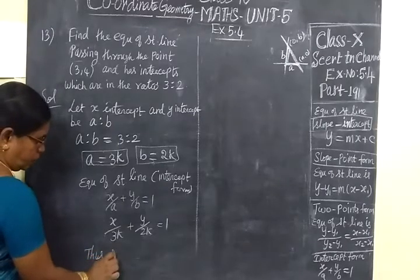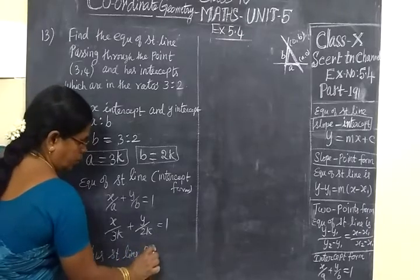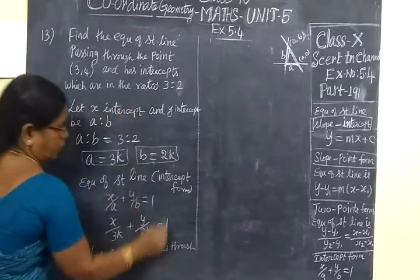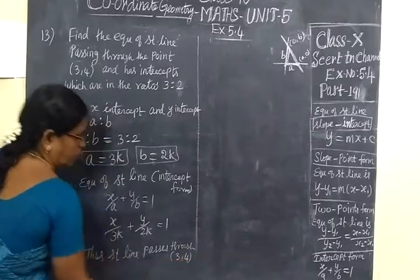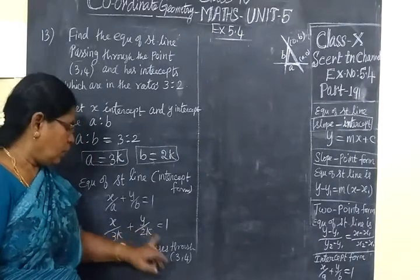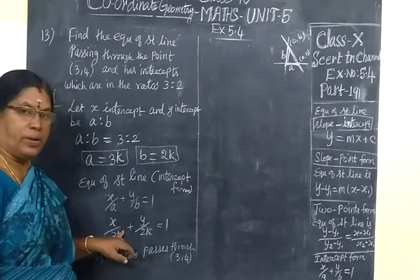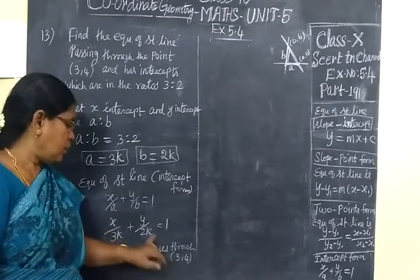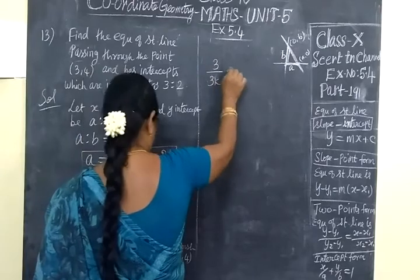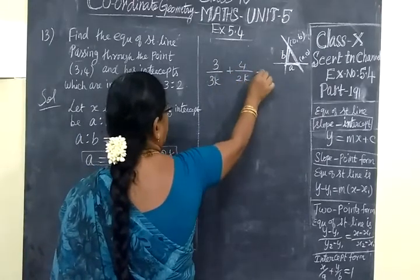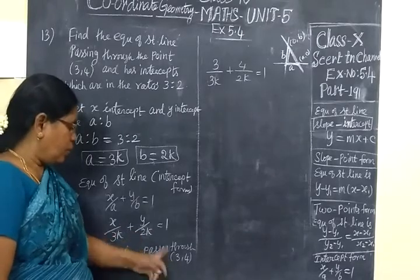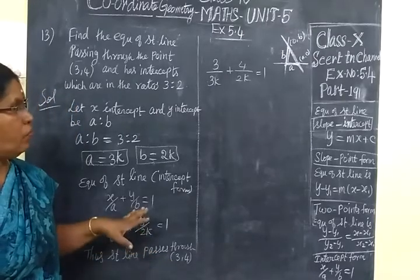And this straight line passes through the given point, the point (3,4). So in the straight line, (3,4) is a point here. Now X you substitute 3, then Y equals 4. Since (3,4) lies on the straight line, you are substituting X equals 3 and Y equals 4. So now you write 3 by 3K plus 4 by 2K equals 1.